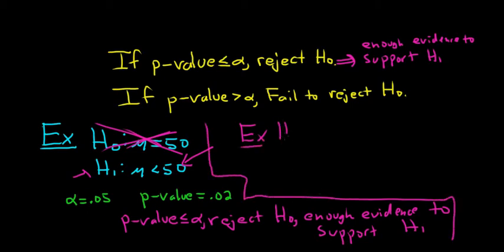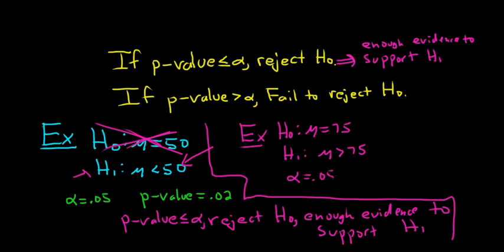So we have our null hypothesis — let's say it's μ equals 75. And let's say our alternative hypothesis is μ greater than 75. Let's say our alpha is 0.05 and our p-value in this fictional example is 0.24.